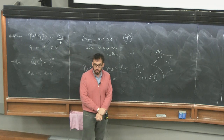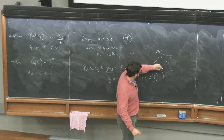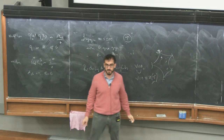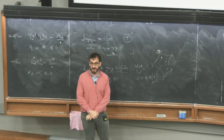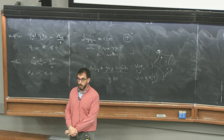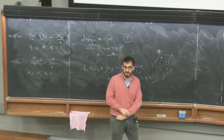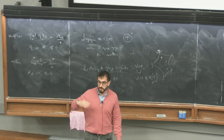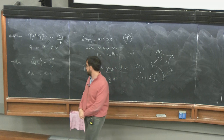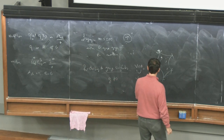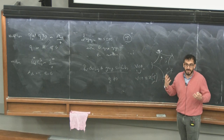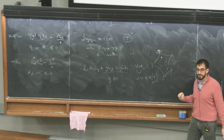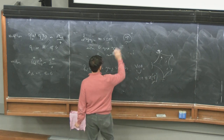Moreover, any continuous deformation inside the conformal manifold which is epsilon away from these cusps leaves the vertex operator algebra invariant. The state space as well as all the OPE coefficients are independent of exactly marginal couplings, once you take into account the discrete jump that happens at each of the cusps. In that sense, the vertex operator algebra of a theory with a marginal coupling captures protected information which is truly invariant under any deformations of the theory, including marginal couplings.